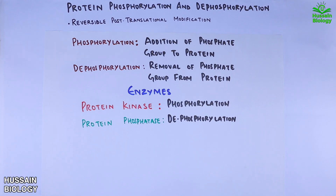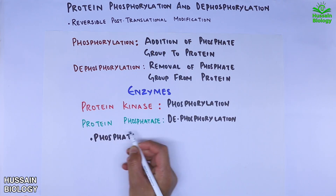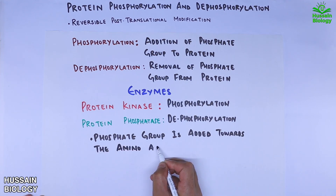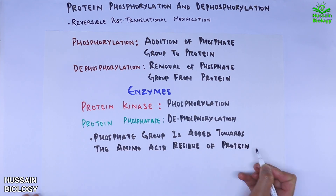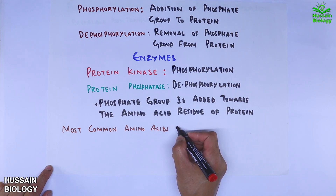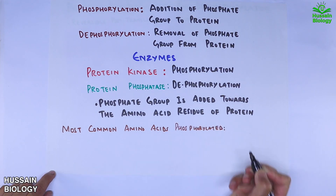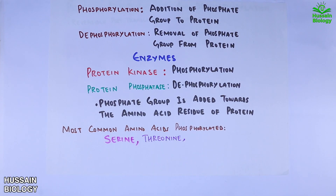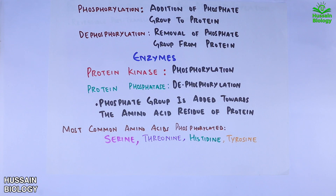It all revolves around the phosphate group, which is added to the amino acid residue of a protein. The most common amino acids which are phosphorylated are serine, threonine, histidine, and tyrosine, though there are other amino acids which can also be phosphorylated.